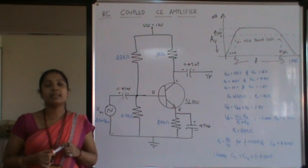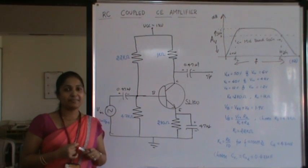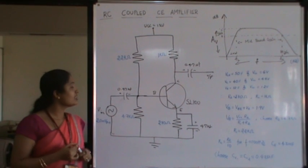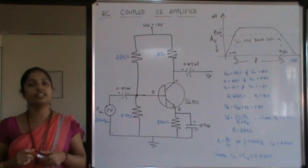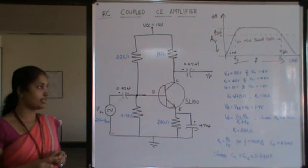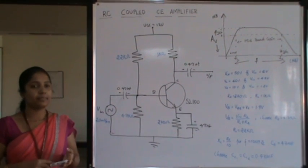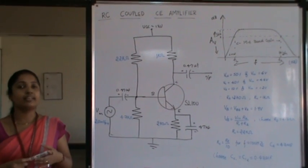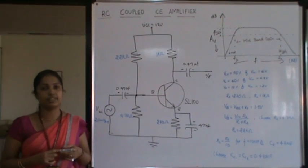RC coupled common emitter amplifier is a most widely used amplifier configuration because it is cheap and also it provides excellent audio fidelity over a wide rate of frequency. This amplifier is most widely used in audio frequency applications in radio and TV receivers and also this can be used for voltage amplification.